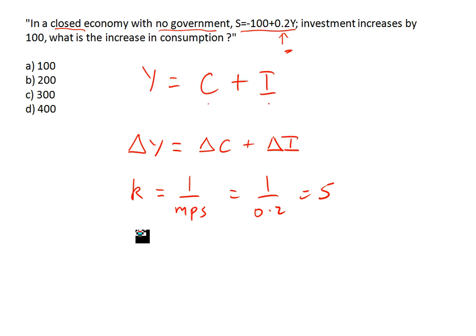So when we want to look at what happens to national income when we change that level of investment, we just say the change in national income is equal to the change in the autonomous spending, in this case investment, multiplied by the multiplier. So it's equal to 100, we've just been told that investment increases by 100, and we know that the multiplier is 5, so the change in Y is equal to 500.